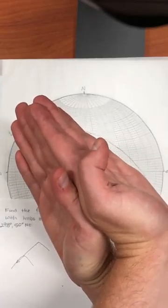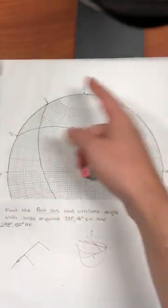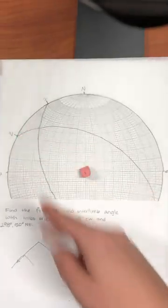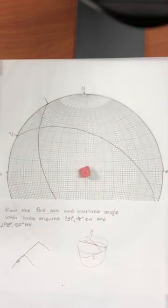So we're dealing with a situation like this: two limbs dipping outward from each other, both dipping relatively steeply, both striking to the northwest. That's what we sketched in this picture. So that means we're doing pretty good.